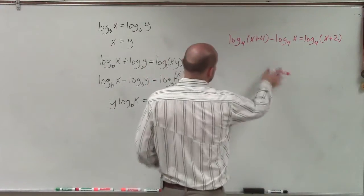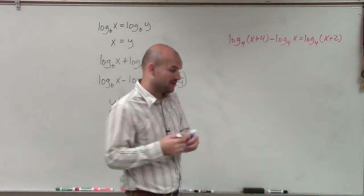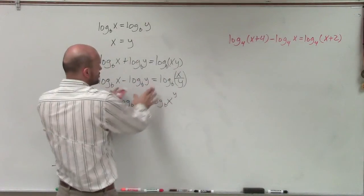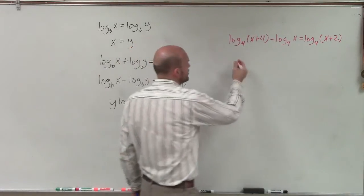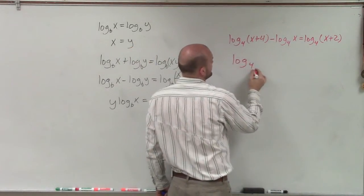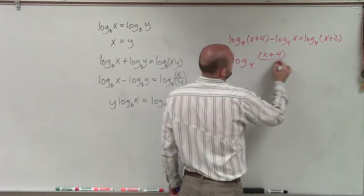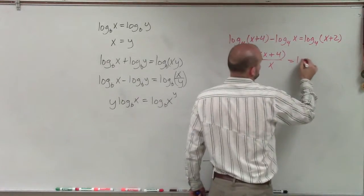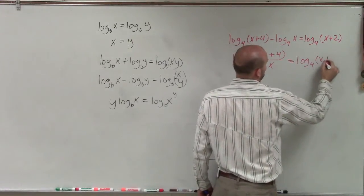So now, in this case, what I'm going to do is apply our properties of logarithms, which states that when we have the subtraction of two logarithms, I can rewrite that as the quotient of one logarithm. So therefore, I can have log base 4 of (x plus 4) divided by x equals log base 4 of (x plus 2).